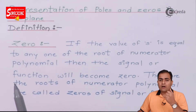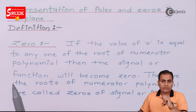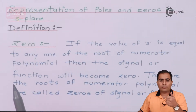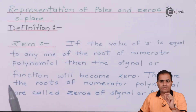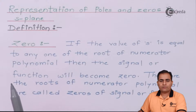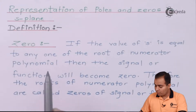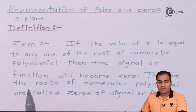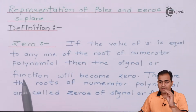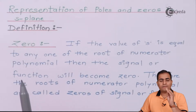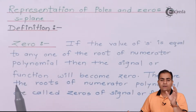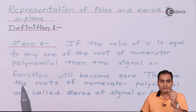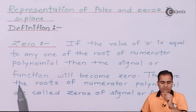The important thing is how to find the zeros and poles using a polynomial value. In the definition, if the value of s is equal to a polynomial value — for example, with the equation s² + 5s + 6 whose roots are (s + 3) and (s + 2).